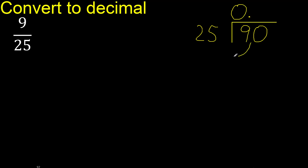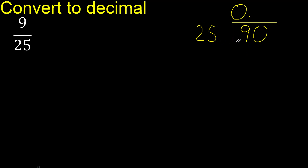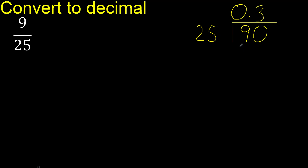90 is not less than 25, therefore 25 multiplied by which number is nearest to 90 but not greater. Multiplied by 4 is 100 — excessive. Multiplied by 3 is 75.